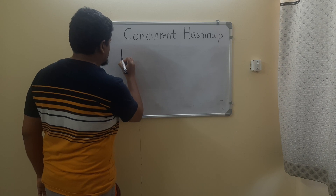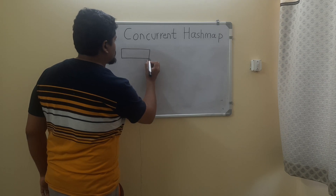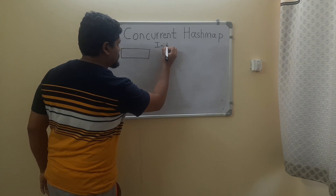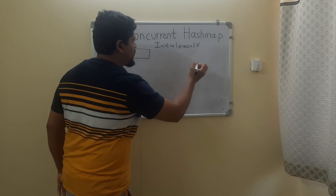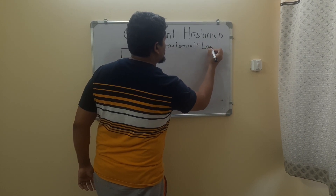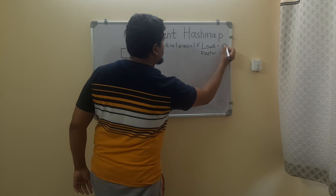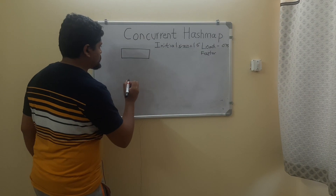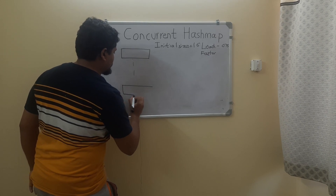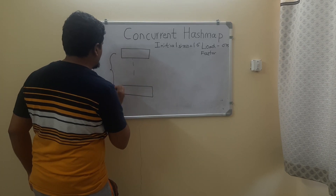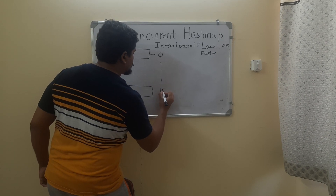There are a list of nodes — the initial size of ConcurrentHashMap is also 16, load factor is 0.75. It consists of 16 buckets in the form of a linked list. This is the first node and this is the 16th node.